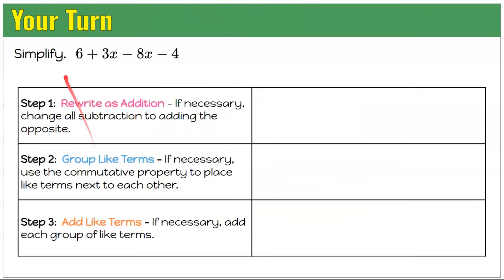Now it's your turn. Simplify: 6 plus 3x subtract 8x subtract 4. I've given you the three steps to follow to organize your thinking. Please pause here, do your best work, and then come back to see mine.